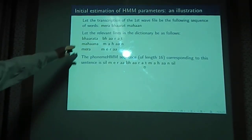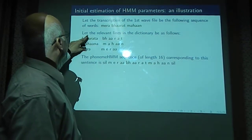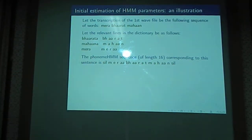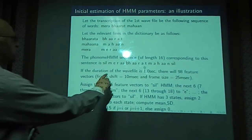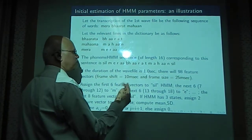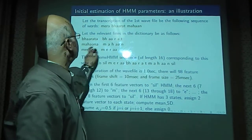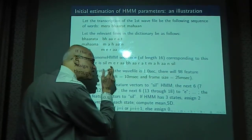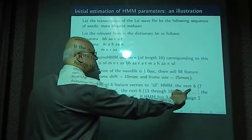As an example, suppose the first spoken sentence is 'Mera Bharat Mahan.' Using the pronunciation dictionary, we derive the corresponding phoneme sequence, which includes two silences on either side. If this sentence is one second long, there will be 98 feature vectors at a 10-millisecond frame shift. We divide these 98 feature vectors into 16 phonemes present in the sequence, which means each phoneme segment in the spoken wave gets approximately 6 feature vectors.